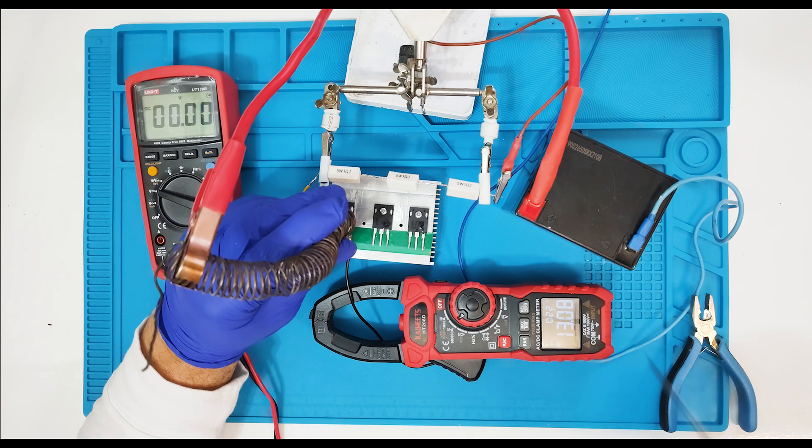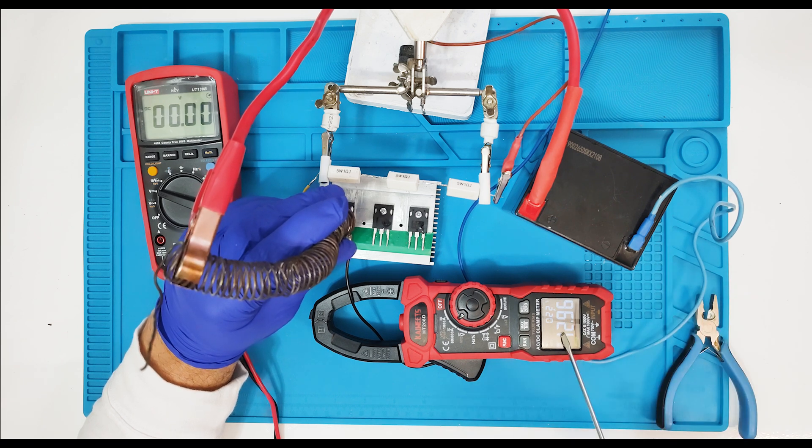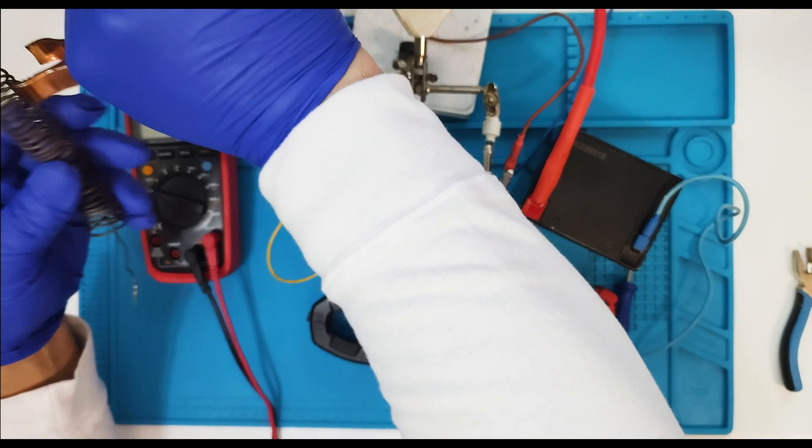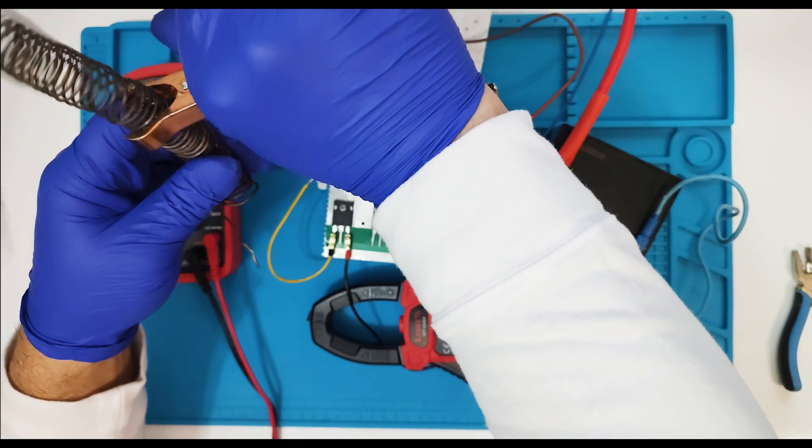Next step we're gonna connect low load on the collector of this transistor. At this time we have absolutely the same. We have 3.5 A on the base. And 13.16 A on the emitter of this transistor.